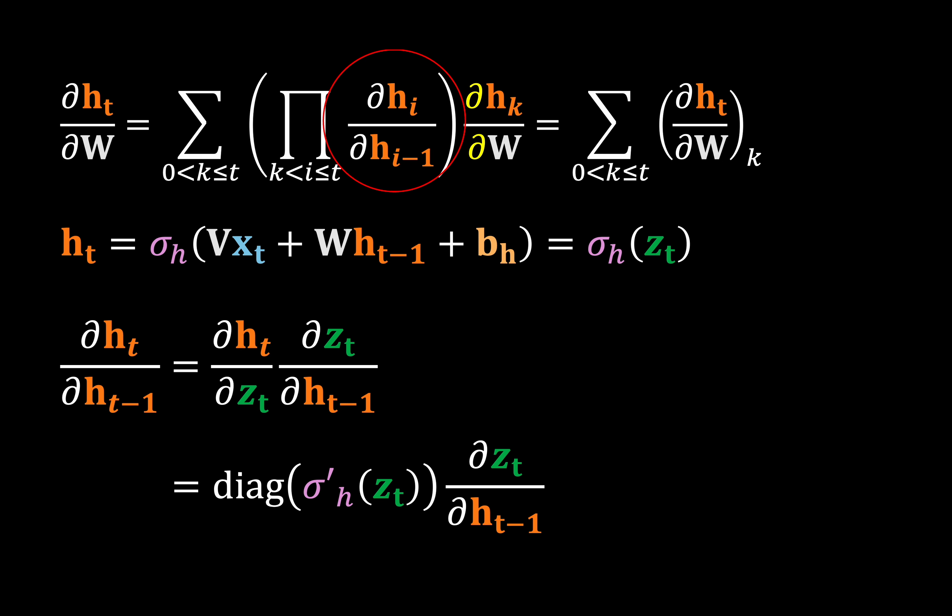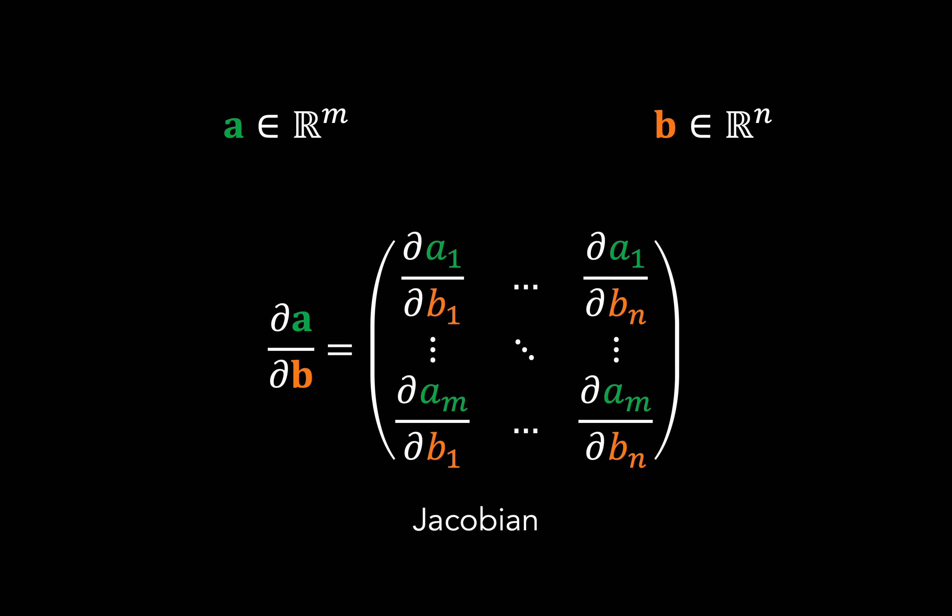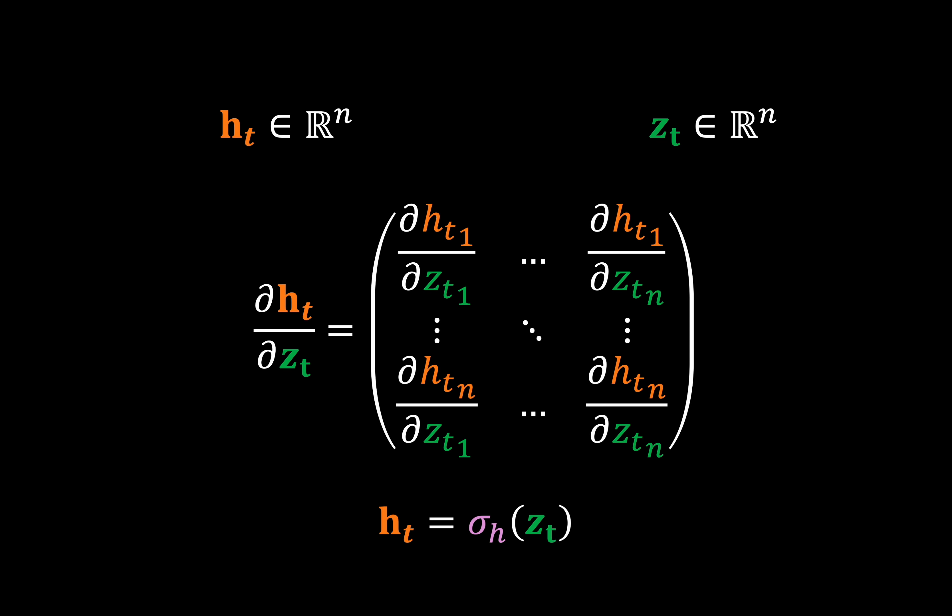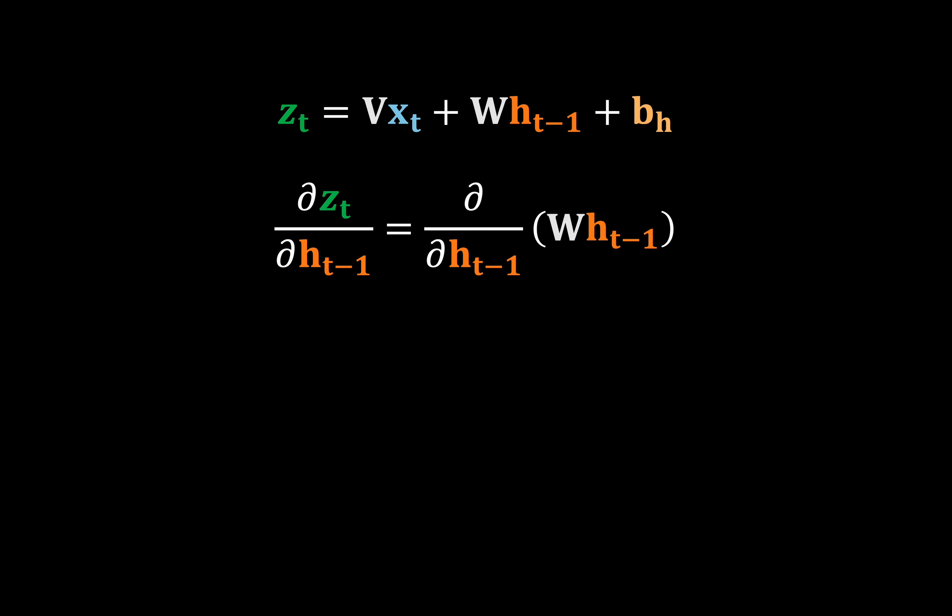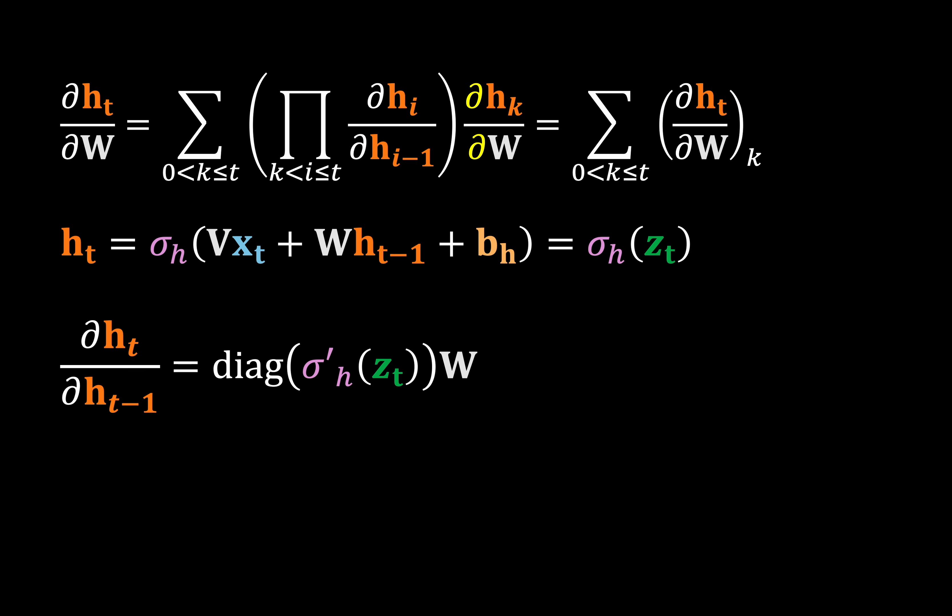The first is just the derivative of sigma applied element-wise to Z, and expressed in a diagonal matrix. To see why, remember that we're finding the derivative of one vector with respect to another. So we're essentially finding the Jacobian matrix. Since the activation function is applied element-wise, all of the non-diagonal terms become zero. So we end up with this. Now we have to find this term, and here it's just equal to W. So quite simple.